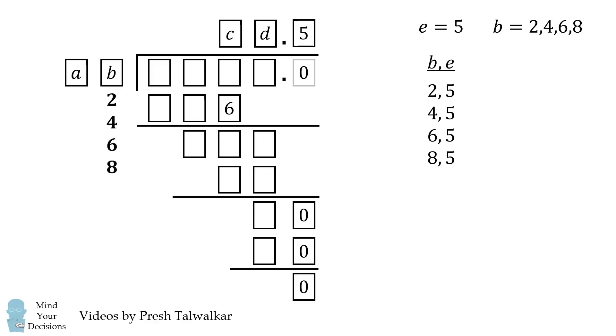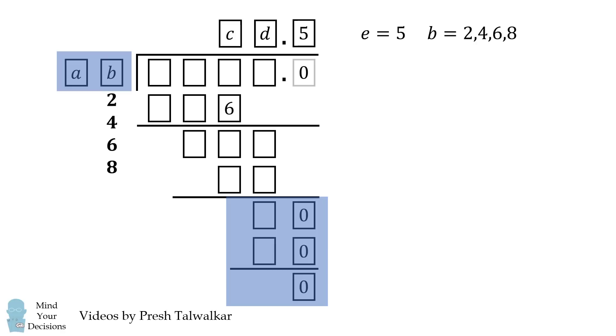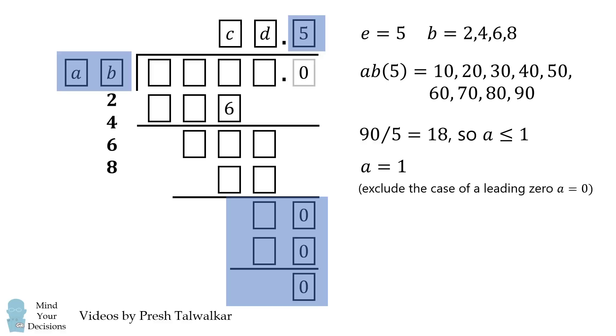We'll combine this with our list. Since B cannot equal 5, we'll eliminate all of these possibilities. Since B cannot equal 0, we'll eliminate this possibility. So, we're left with the following four options. In all cases, E equals 5. We then have B equals 2, 4, 6, or 8. We can deduce further. Notice that in the very last step, it's the result of AB multiplied by 5. So AB multiplied by 5 has to be a two-digit multiple of 10. The largest multiple that's two digits is 90. 90 divided by 5 equals 18. This means A has to be less than or equal to 1. This means A equals 1, because we exclude the case that A equals 0. Therefore, A equals 1.